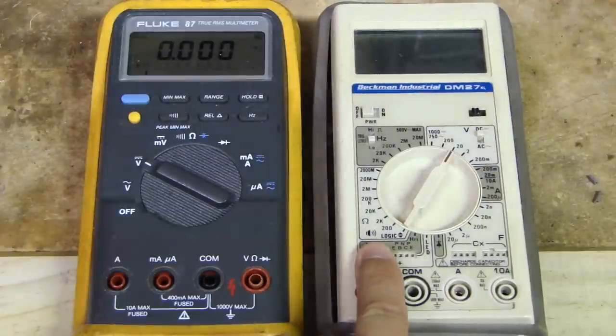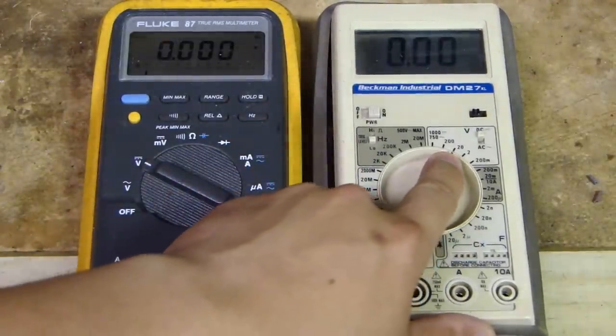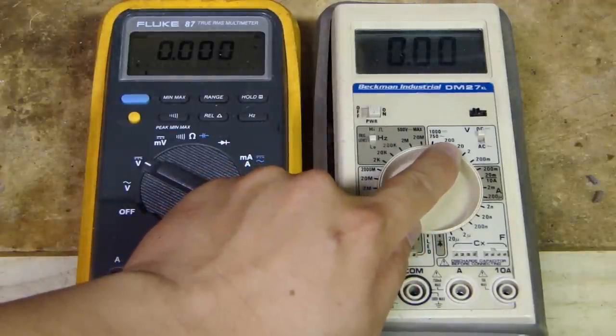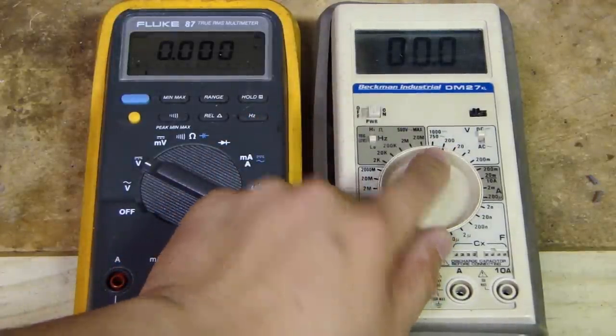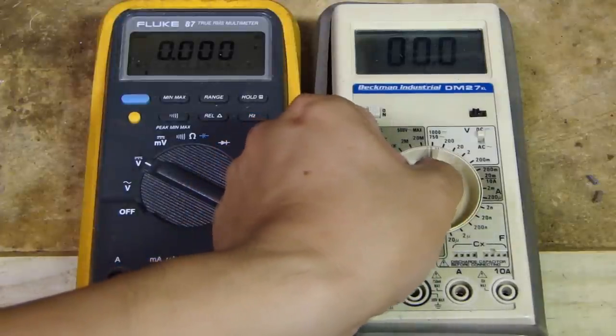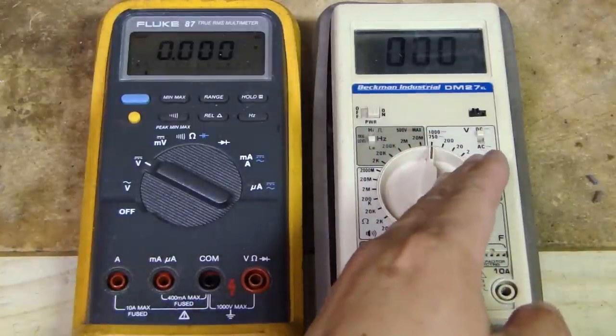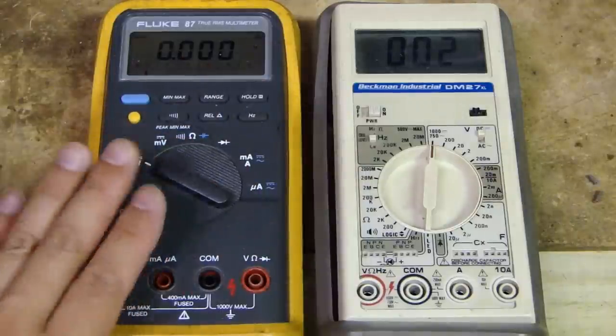Whereas on this one, if I want to measure the voltage, I have to tell the multimeter if it's up to 20 volts or up to 200 volts or even up to 1000 volt DC. And every time I move this knob, it moves the decimal point. So on this one, I don't have to do that.